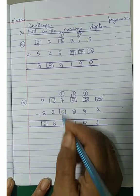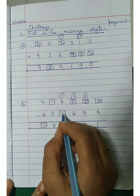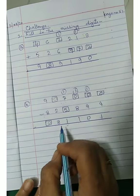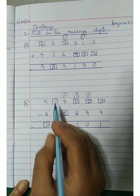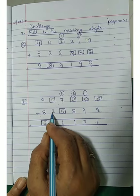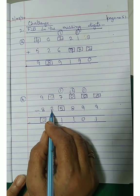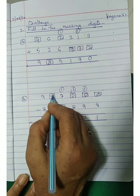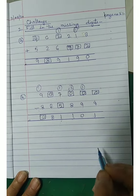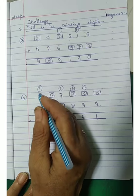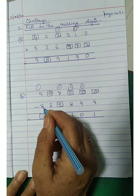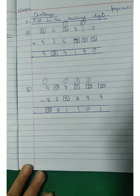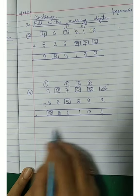अब 1 plus 1 = 2, तो 7 में से 2 minus करना है — answer आया 5। अब ऊपर का number missing है तो subtrahend और difference को plus करना है: 8 plus 2 = 10, 10 की 0, carry आया 1। अब 8 plus 1 = 9, तो 9 में से 9 minus करेंगे तो यहां पर आएगा 0। Is it clear to everyone?